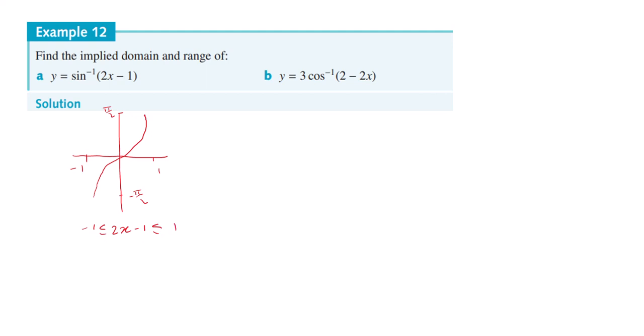So now just do the algebra. Add 1 to both sides and you have 2x is greater than or equal to 0 and less than or equal to 2.